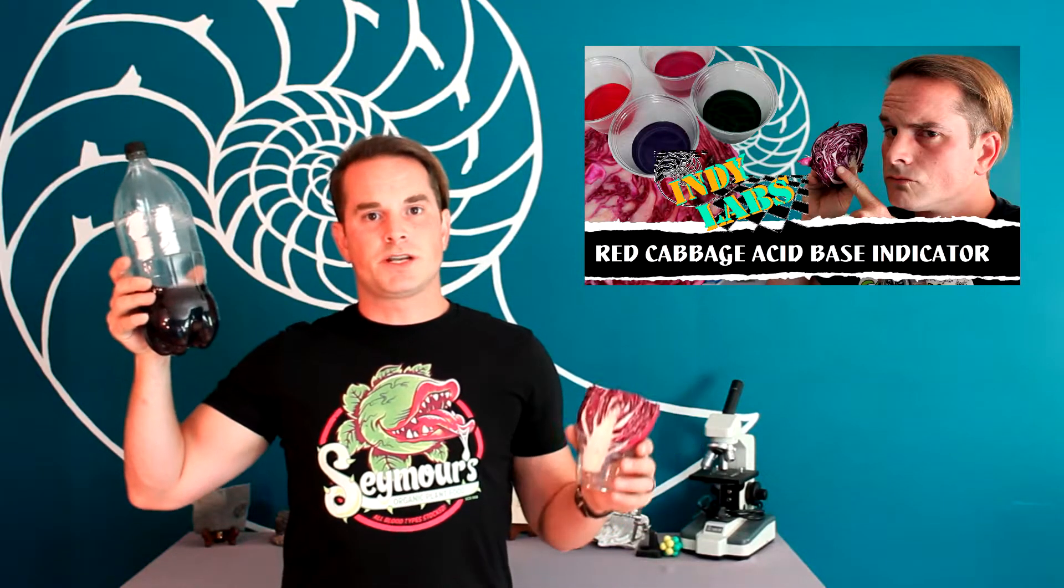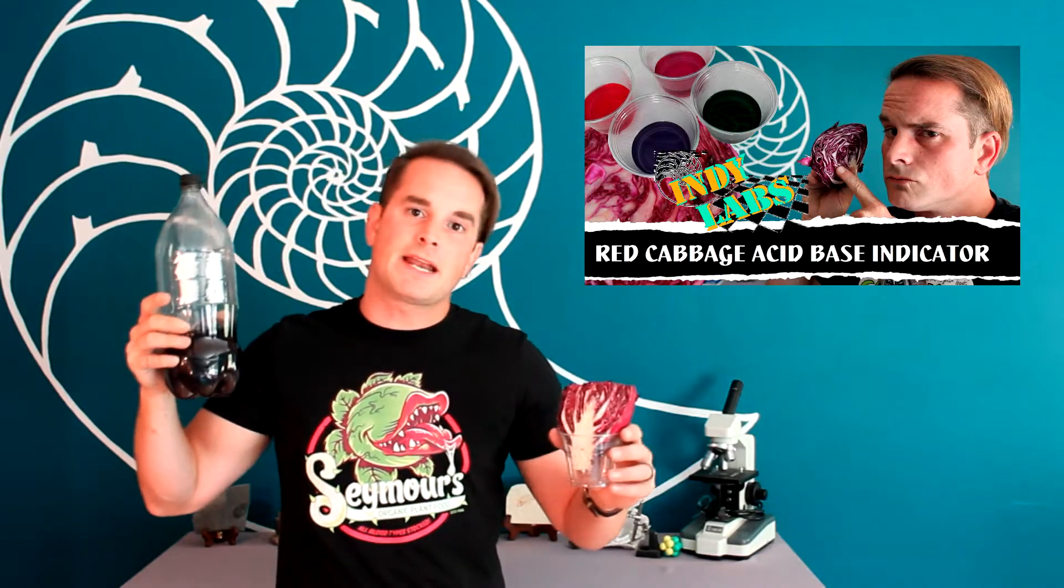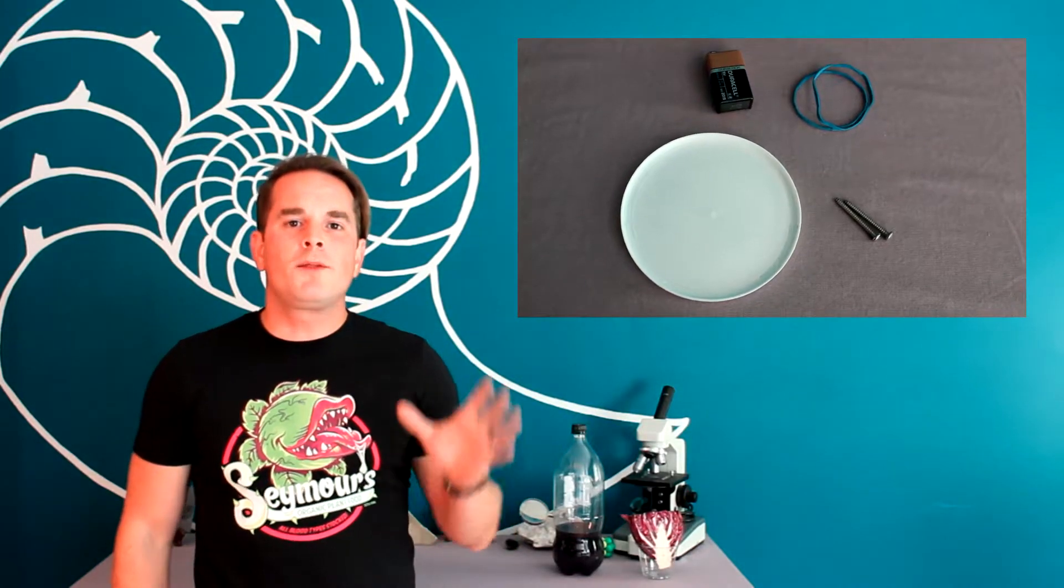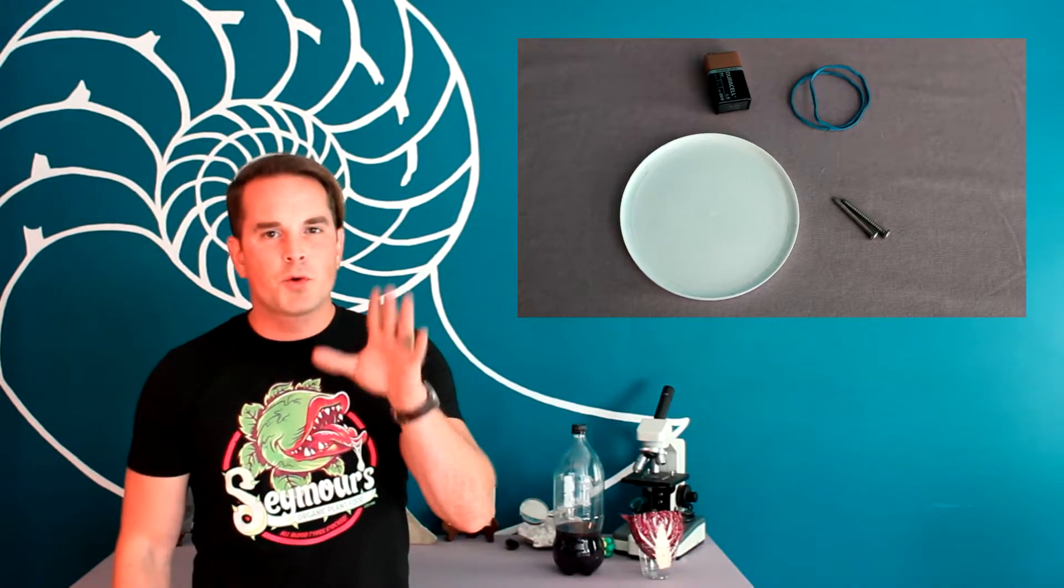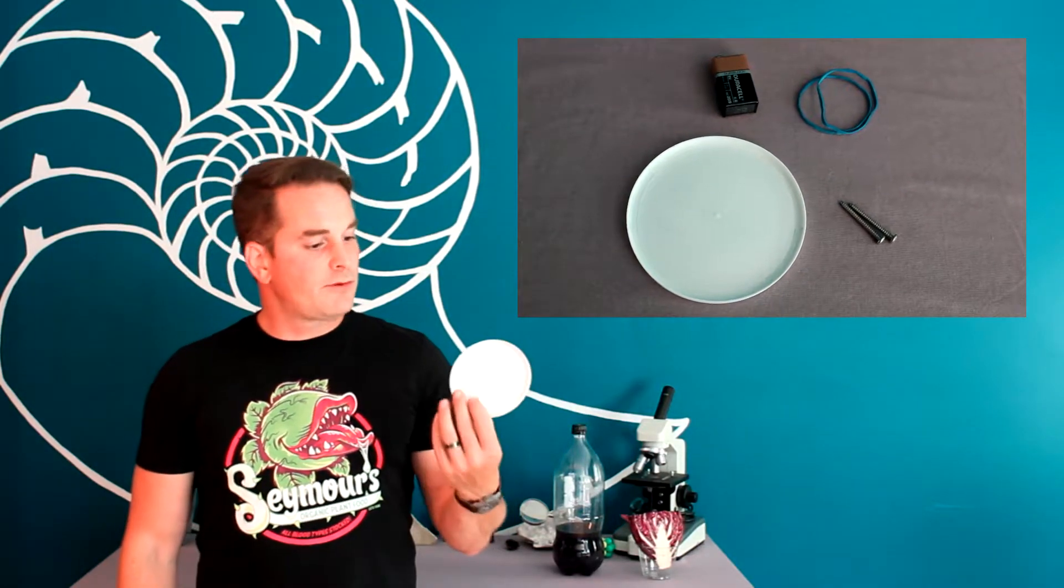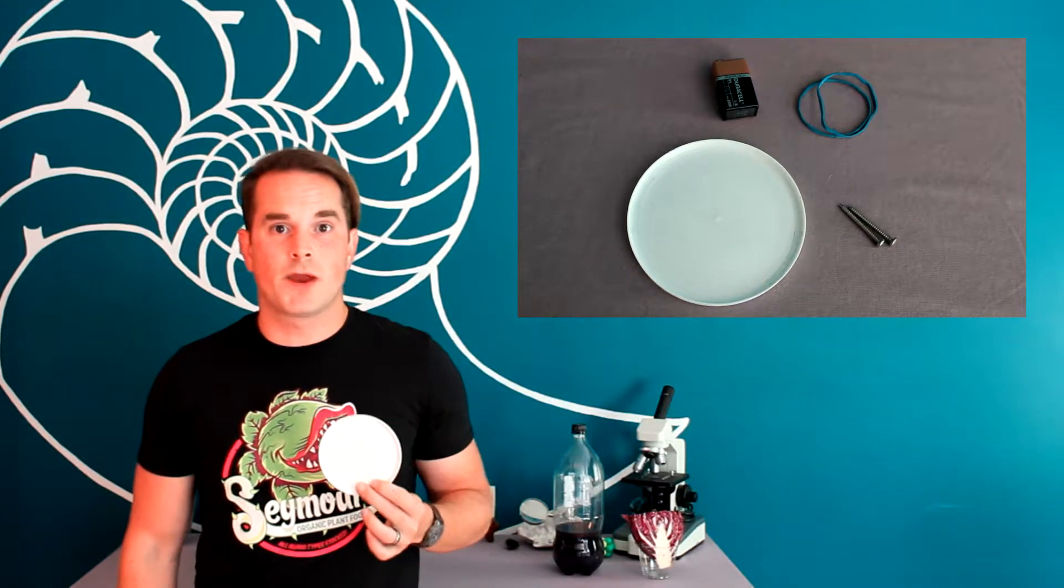Alright, so if you would, keep all that in mind. And now, let's get into the experiment. Here's what you're going to need. You need an indicator solution, like the red cabbage juice that we made back in Indy Labs number 20. Still got some of that around? You'll need a 9-volt battery, two rubber bands. You want a small, very shallow dish. Either white or see-through, so we can put something white underneath it. And for me, really, just the lid off of the yogurt that I tend to eat works great.